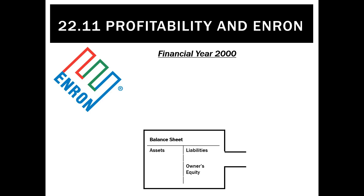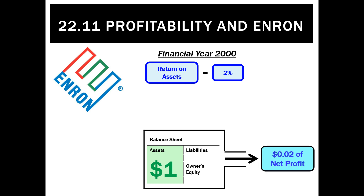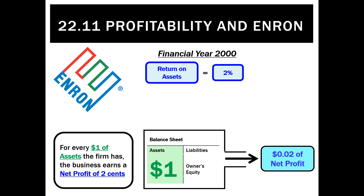How well were they using their assets to generate profit? By the year 2000, Enron was basically 10 times bigger than Apple in terms of assets. But looking at the ROI ratio for 2000, it was only 2%. That means for every dollar they had of assets — about $65 to $66 billion worth — they were only making a net profit of $0.02 on every asset dollar, which is very, very low.